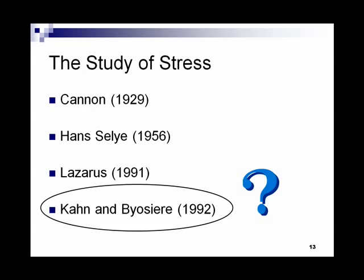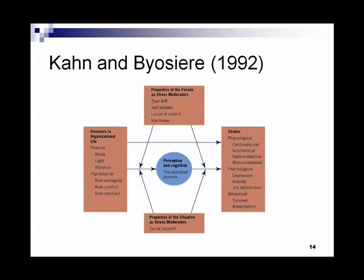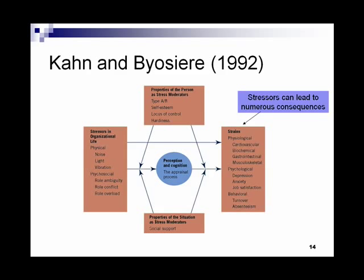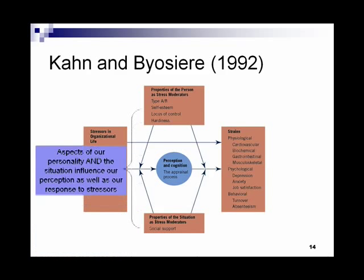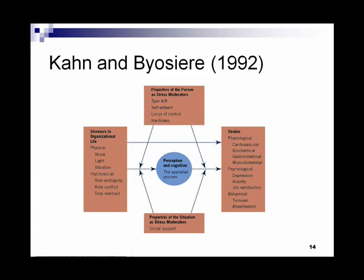Finally, there is Kahn and Biosier, who came up with a comprehensive model of stress. They said there are many stressors in the workplace—physical and psychosocial—which can lead to physiological, psychological, and behavioral consequences. They emphasized the importance of our perceptions in interpreting and responding to stressors, and that aspects of our personality and situation also influence our perception and response to stressors.